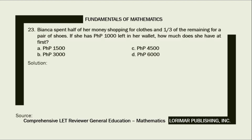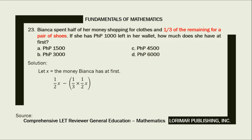Here is our solution. Let X equal the money Bianca has at first. Convert the sentential expression to its mathematical equivalent. Bianca spent half of her money shopping for clothes — that becomes one-half of X. Next, one-third of her remaining money was spent for a pair of shoes — that becomes one-half of X minus one-third times one-half of X. Bianca has 1,000 pesos left, so: one-half of X minus one-third times one-half of X equals 1,000.